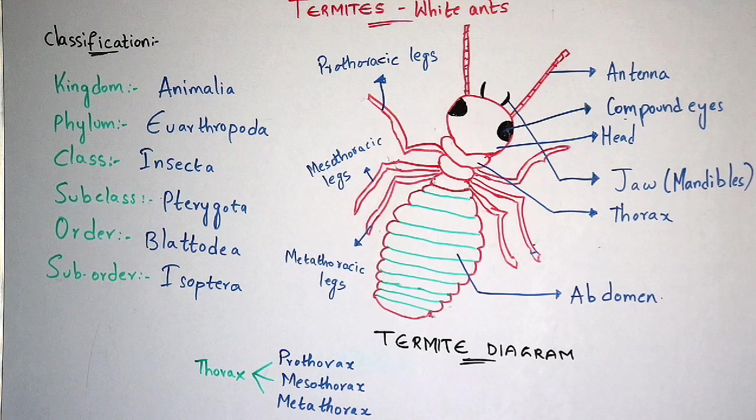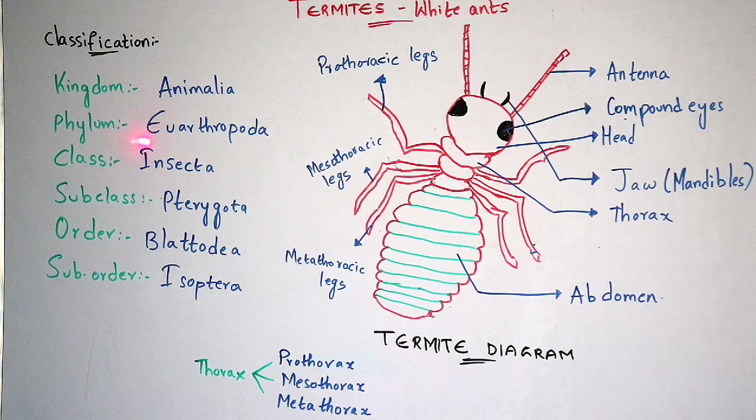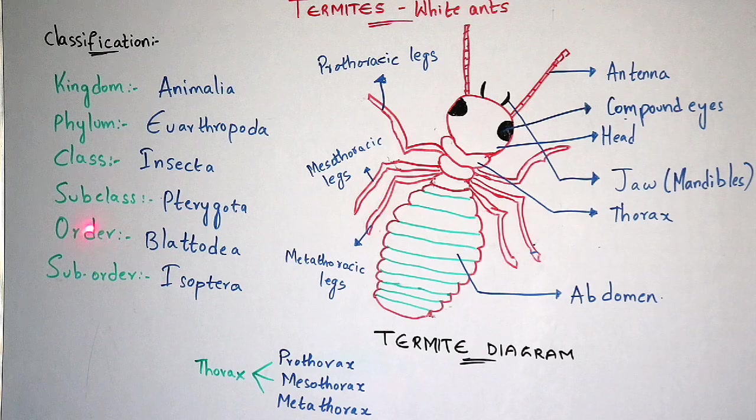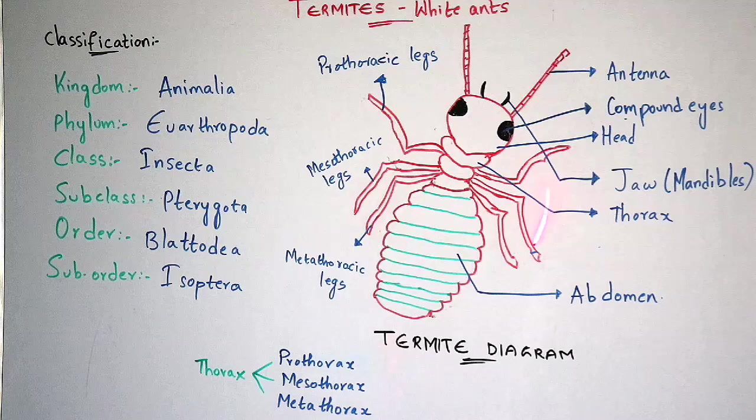Normally termites are called as white ants. Coming to the scientific classification of termites: it belongs to the kingdom Animalia, phylum Arthropoda, class Insecta. The subclass is Pterygota — here the P is silent. Coming to the order Blattodea, and the suborder Isoptera — here again P is silent, so you should pronounce it as Isoptera.